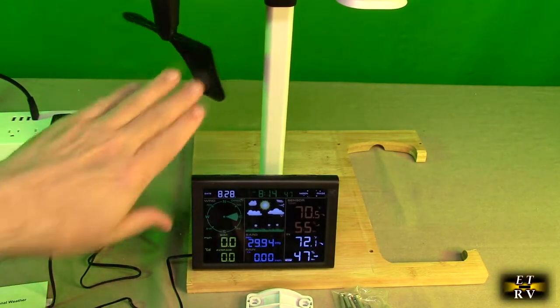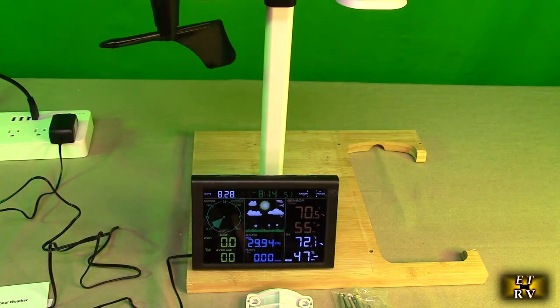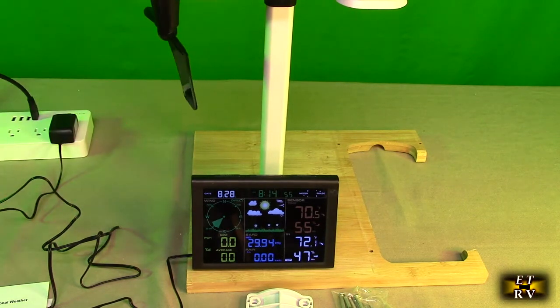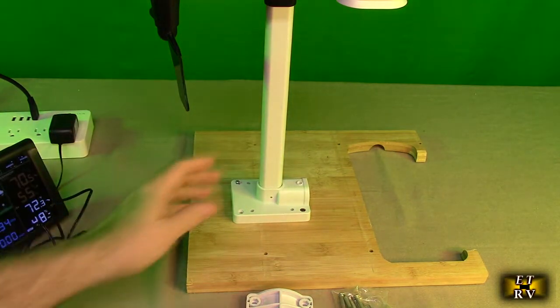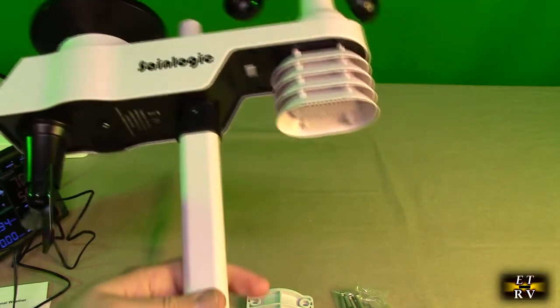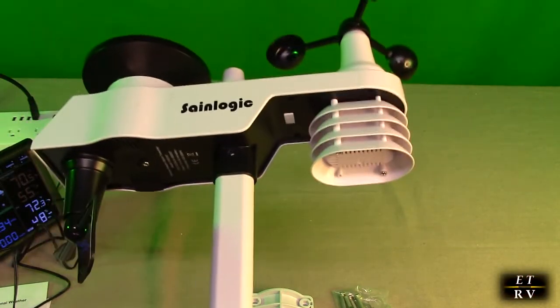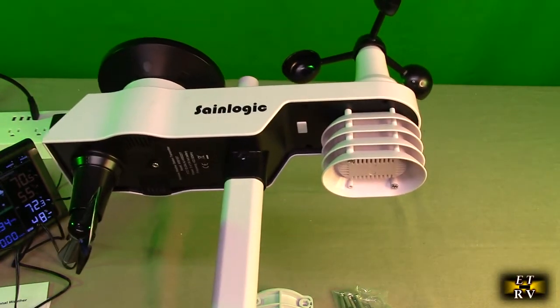On the bottom of there, there's a screw you undo and you put in three AA batteries and it starts transmitting. And on the bottom of the unit, there is a little indicator. Right over here, there is a reset button and that button also blinks when you first put the batteries in. And you can see the little red light blinking occasionally.